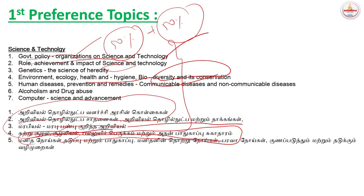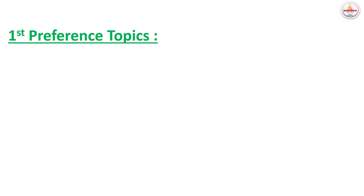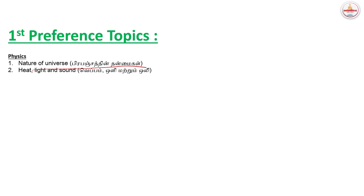Next, human diseases — communicable diseases and non-communicable diseases. This is the main topic. Next, alcoholism and drug abuse. Computer is a different subject, but if you have 10 to 20 marks, you can ask questions. First preference is science and technology. This is the nature of the universe — if you ask questions, you can ask questions with answers.